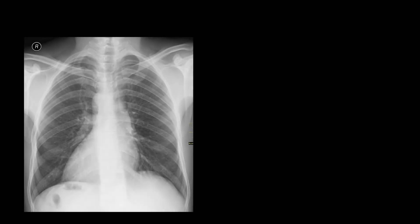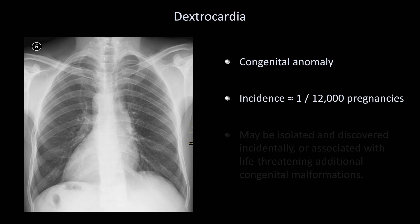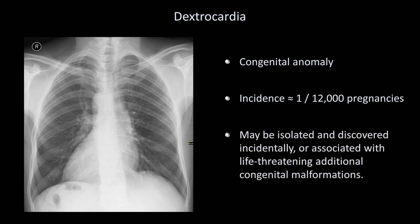Before moving on to the mediastinum and hila, I want to briefly mention a congenital anomaly which, although relatively rare, tends to be mentioned during rounds or on tests out of proportion to its prevalence. At first, you might assume this x-ray was loaded backwards, if it weren't for the capital R in the upper corner indicating the correct orientation. This person has dextrocardia, which occurs when the heart loops in the opposite direction as normal during early embryologic development. Its incidence is about 1 in 12,000 pregnancies. It may be isolated and discovered incidentally, or it can be associated with life-threatening additional congenital malformations.